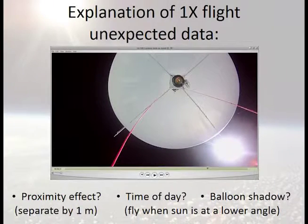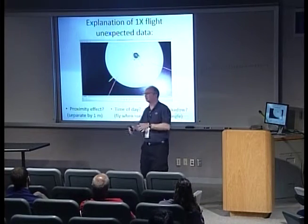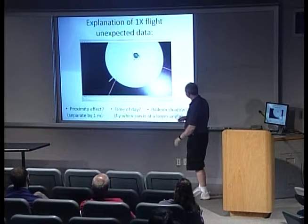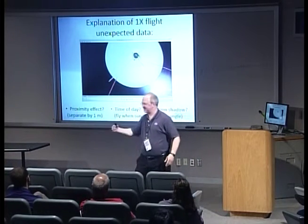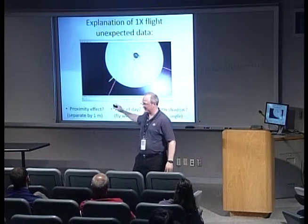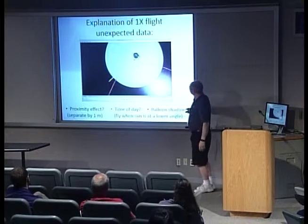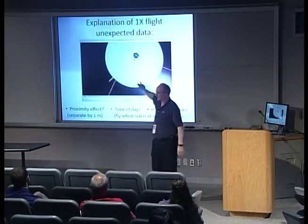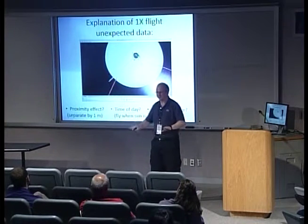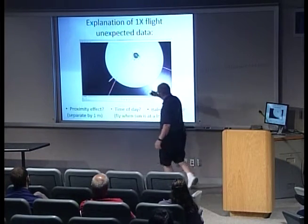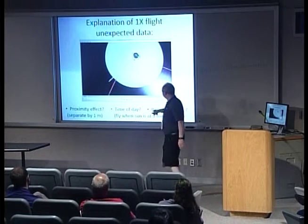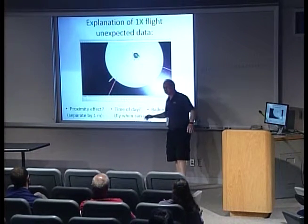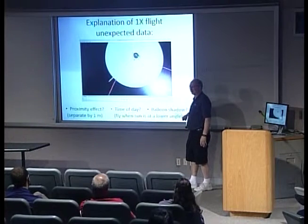Here are some explanations for what happened. First, the center of the wake is right on top of the box — we believe the temperature elevation was largely a box proximity effect, possibly swamping the wake effect. Second, the top of the balloon is hot, not the side — we were flying in the middle of the day, which was actually a mistake. Third, the shadow of the balloon was falling on the boom, shadowing our sensors and making them cold. Fixes: remove the box from the boom and drop it a meter below; fly when the sun is lower in the sky — early morning or close to sunset.